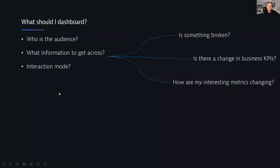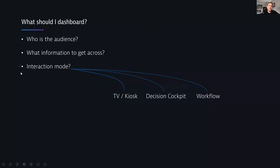Are you creating a dashboard for incident response teams who need to know when there's an issue? Are you creating it for executives and line-of-business owners? Or for analysts and developers who want to dig deep? Think about what information you want to convey — are we communicating that something's broken, looking for changes in business KPIs, or focusing on interesting metrics? Also think about interaction mode: will it be on a TV, used during a critical business period for quick decisions, or more interactive for digging into data?